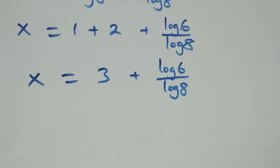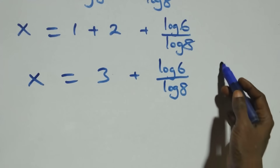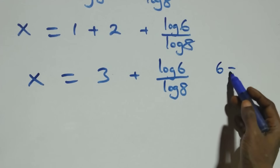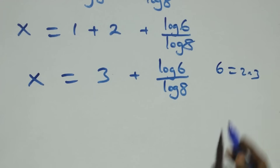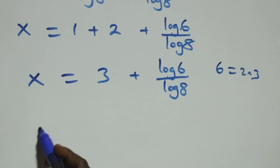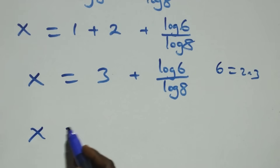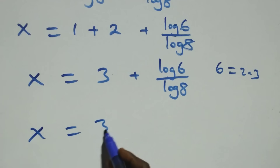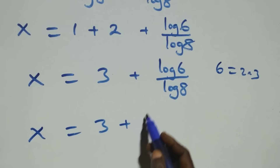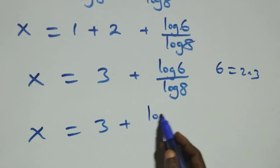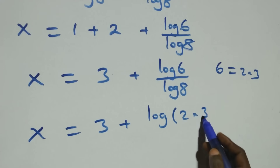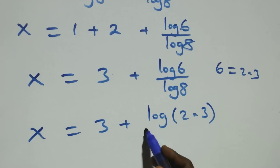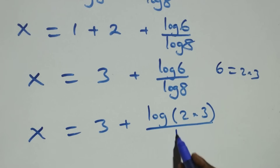Then also here, we have x equals 3 plus log 6 over log 8. And what we have becomes x equals 3 plus log of 2 times 3 over log 8.